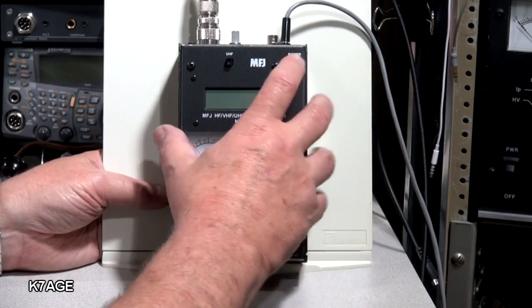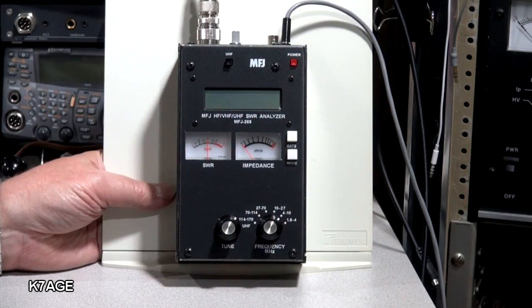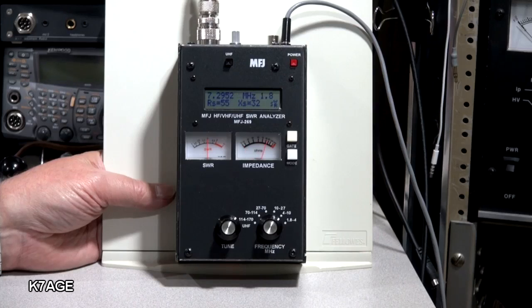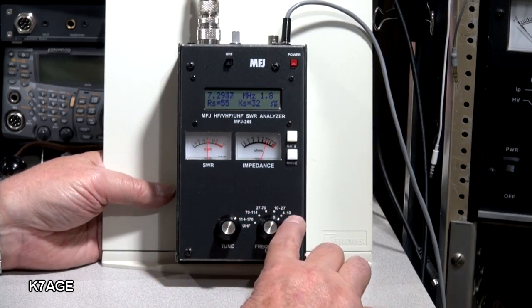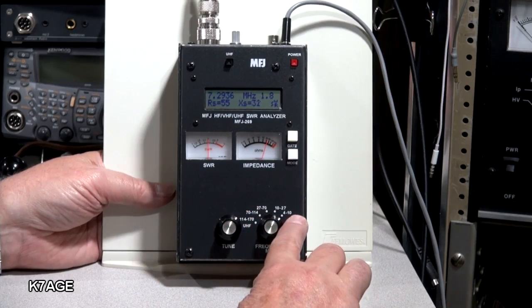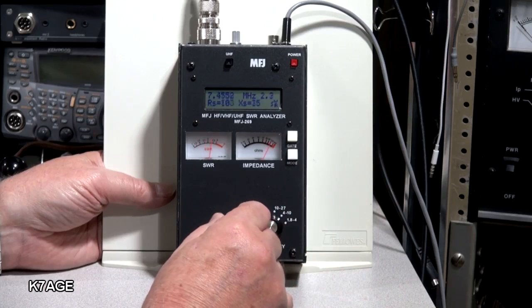Okay, so the way this works, you turn the meter on. It goes through a little self-check. It tells you the software MFJ. It tells you the battery's okay. And it's in the basic impedance or SWR checking. I have it on the 4 to 10 MHz scale because I'm checking a 40 meter dipole which is 7 MHz. And this knob then allows you to tune.